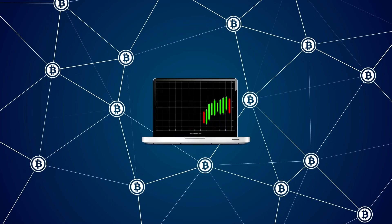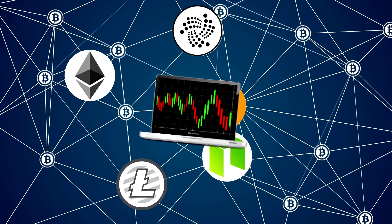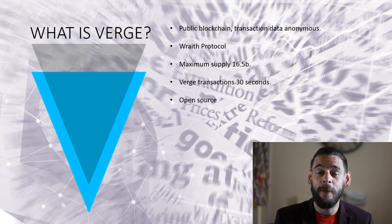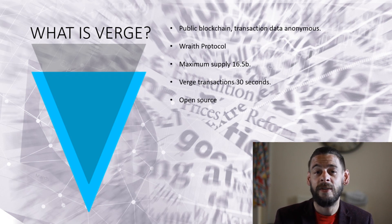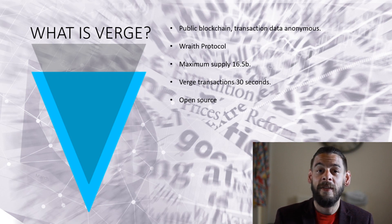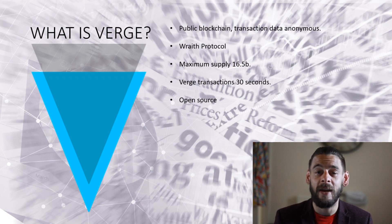Verge is a privacy coin. It runs its own public blockchain and focuses solely on keeping transaction data anonymous. They recently released Wraith Protocol, which allows a user to turn on or off the anonymity function for transaction data. It has a total supply of 16.5 billion and the Verge network aims to add blocks once every 30 seconds. Verge's source code is completely open source, so anybody can go check out the code — I actively encourage it, go check out the Verge GitHub.